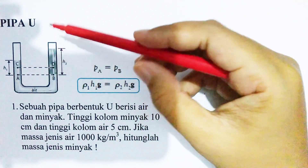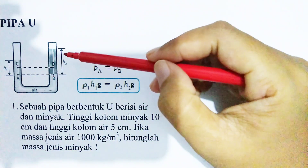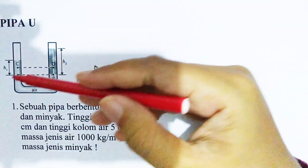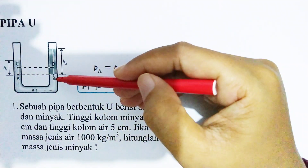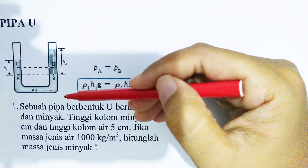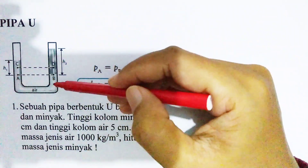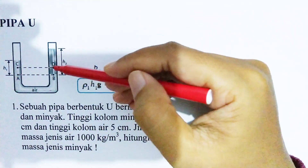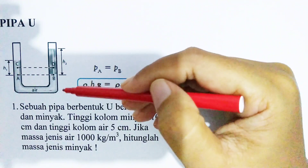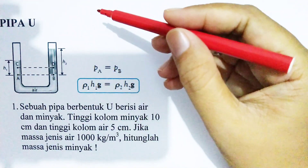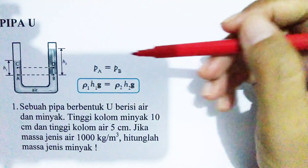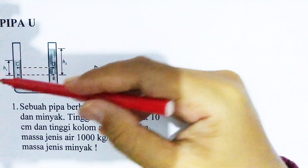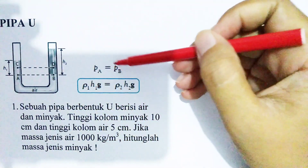Sesuai dengan hukum hidrostatika, semua titik yang berada di ketinggian yang sama mempunyai tekanan yang sama. Titik A dan B mempunyai tekanan yang sama, berbeda dengan yang ada di C dan di D karena mereka cairan yang berbeda. Sesuai hukum tersebut, tekanan di A dan tekanan di B mempunyai tekanan yang sama.